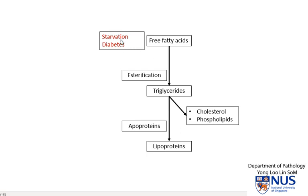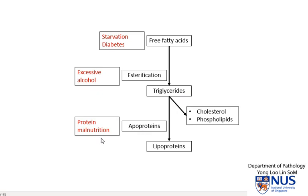There are several things that can go wrong along this pathway that can give rise to accumulation of triglycerides in the liver cells. If there is a state of starvation or diabetes, this increases the mobilization of fat and therefore increases the delivery of free fatty acids to the liver. Certain toxins such as alcohol can give rise to increased esterification of fatty acids and therefore accumulation of triglycerides. Another important cause is protein malnutrition, because this gives rise to decreased synthesis of proteins and therefore apoproteins — and hence the triglycerides become trapped in the liver cells, unable to exit in the form of lipoproteins.